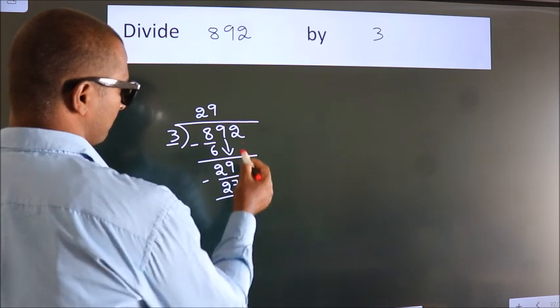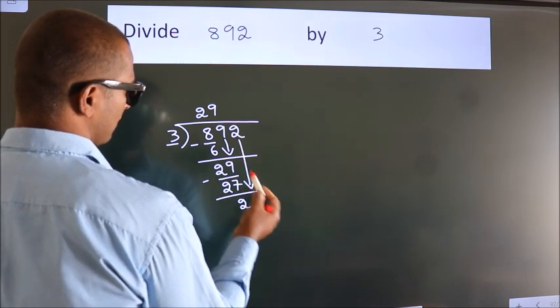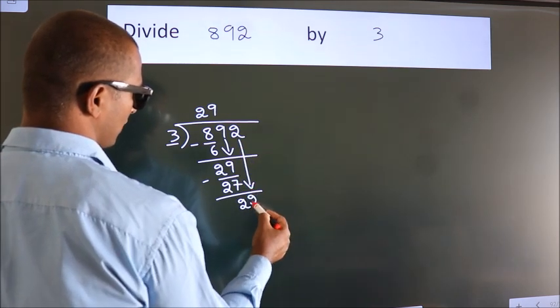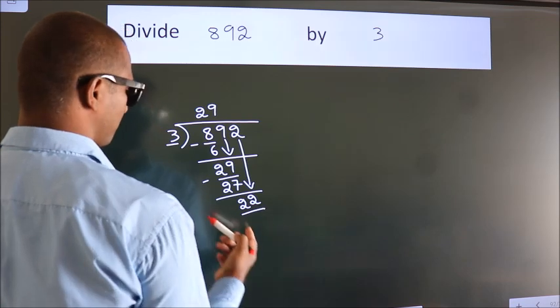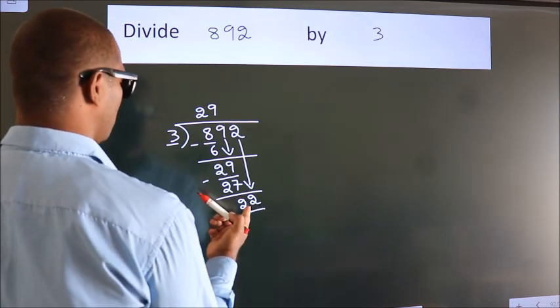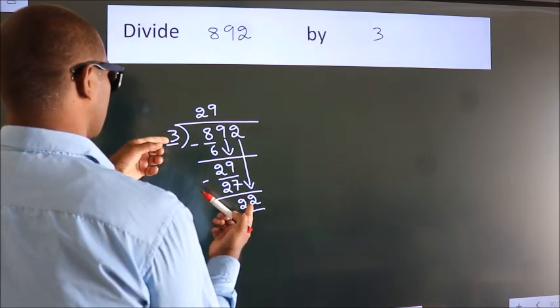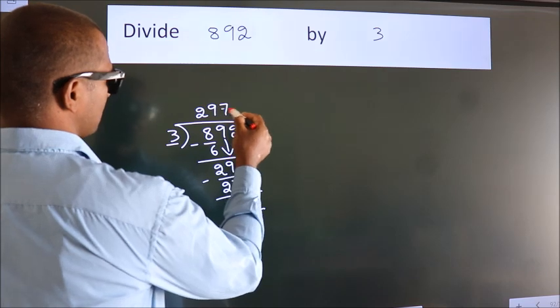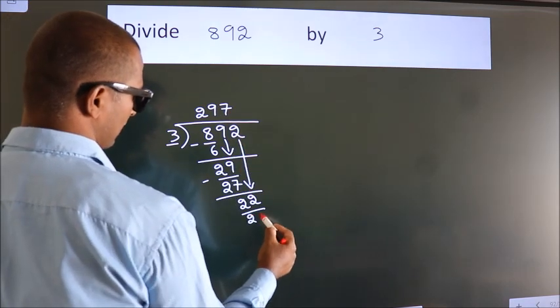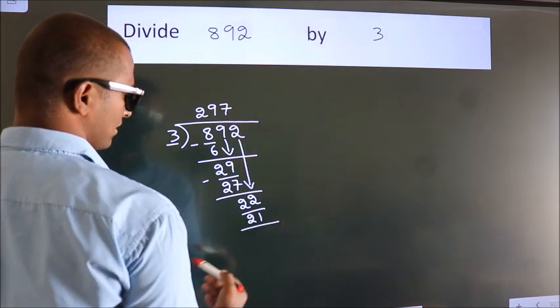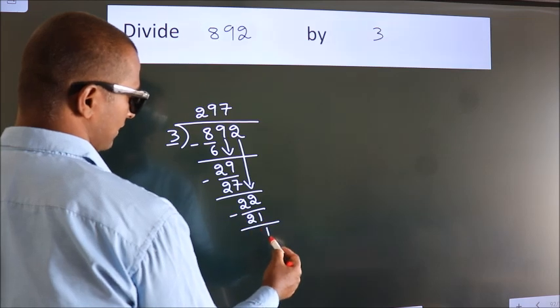After this, bring down the beside number. So 2 down, so 22. A number close to 22 in 3 table is 3 7's, 21. Now we subtract. We get 1.